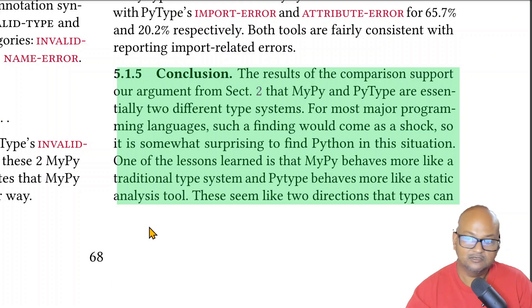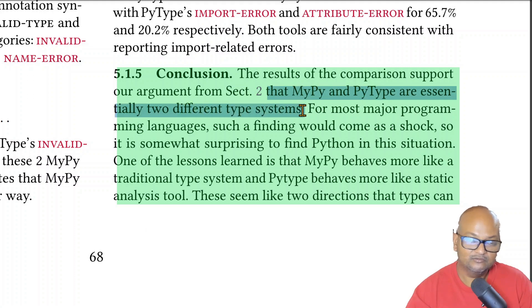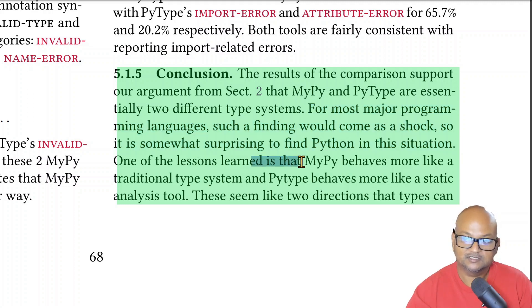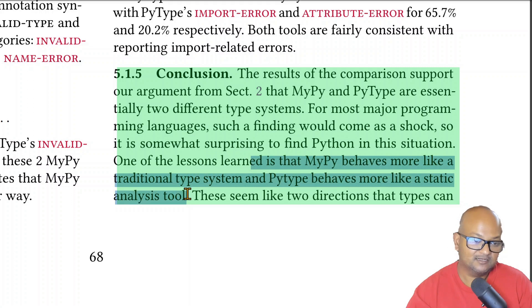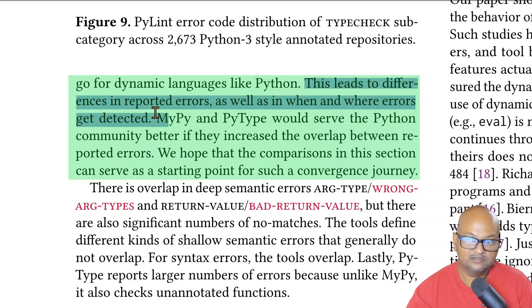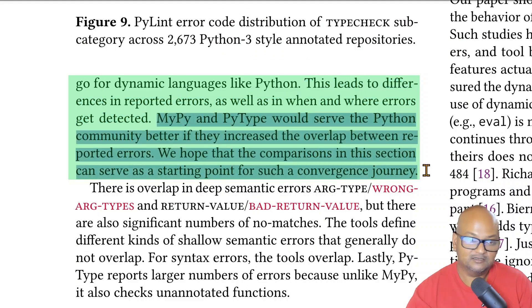The authors conclude that MyPy and PyType, being the two most common type checking tools for Python, are essentially two very different type systems. This is a surprising situation for a major programming language to have two different type systems in prevalent use. The authors find that MyPy is more like a traditional type system, whereas PyType is more like a static analysis or linter kind of tool. Both tools report different errors and also differ in when and where those errors get detected. Eventually, the Python community needs a more convergent type checking solution.